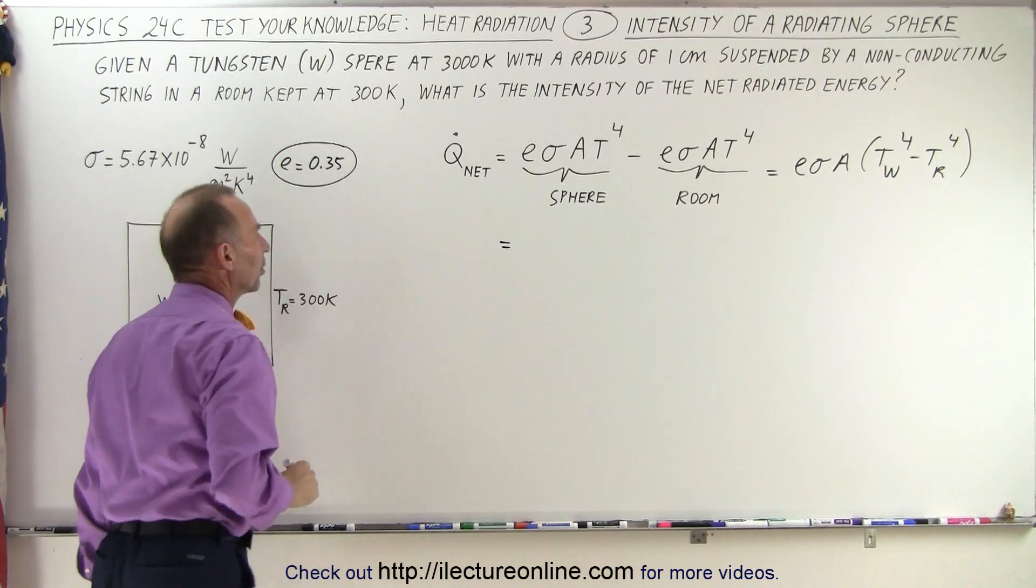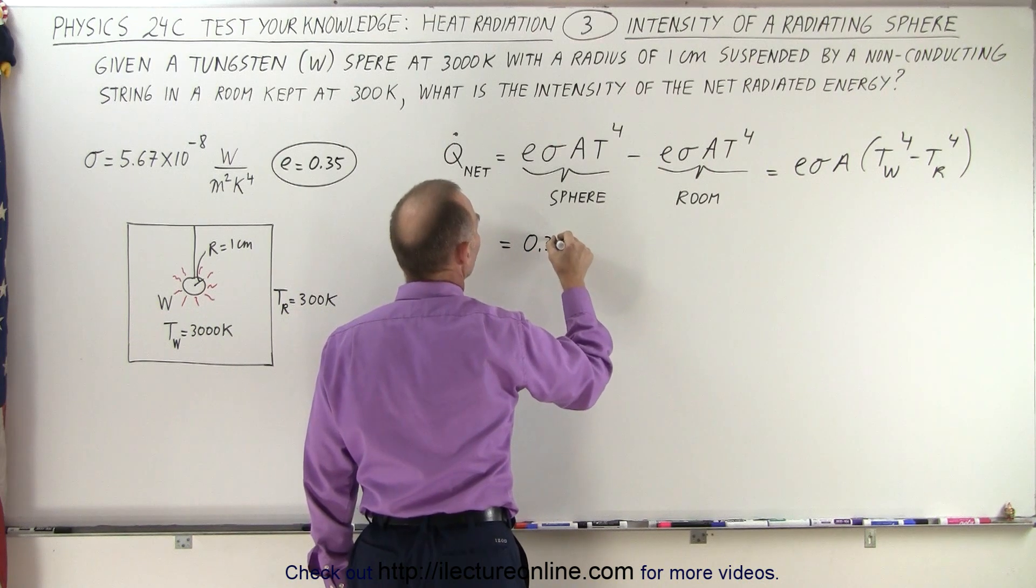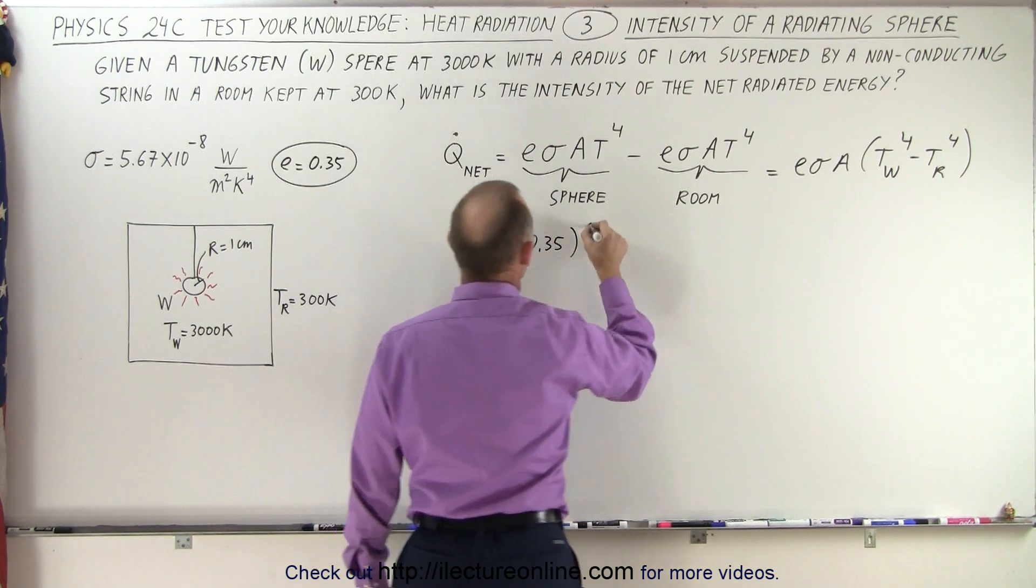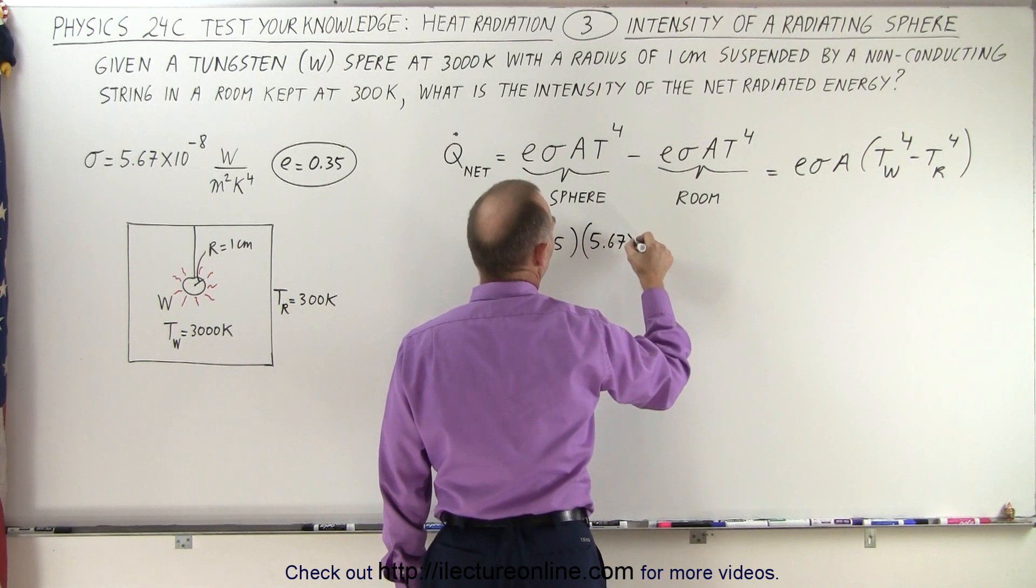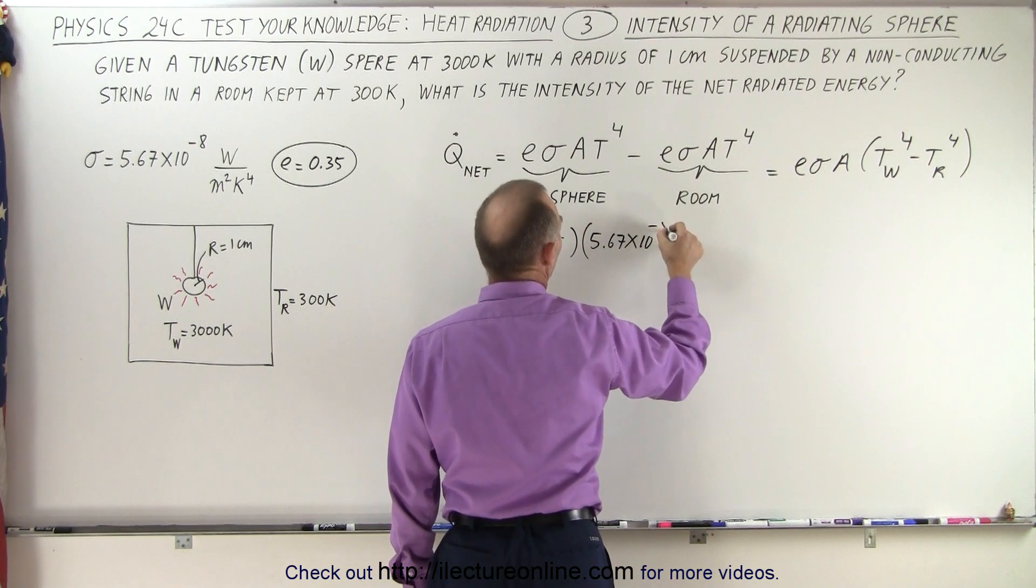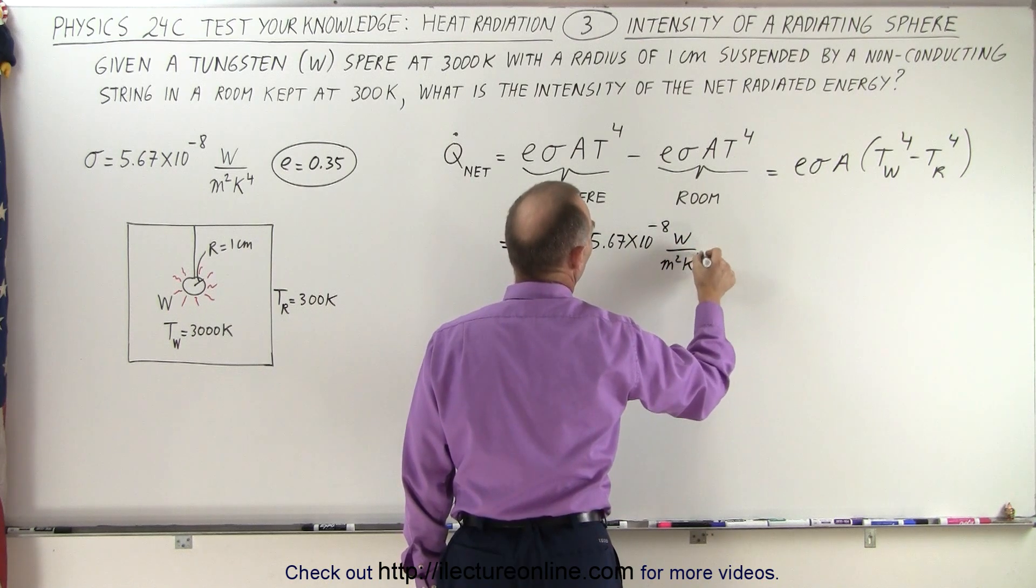So, low emissivity for the tungsten. That will be equal to 0.35 multiplied by sigma, which is 5.67 times 10 to the minus 8, that would be watts per meter squared times Kelvin to the fourth power,